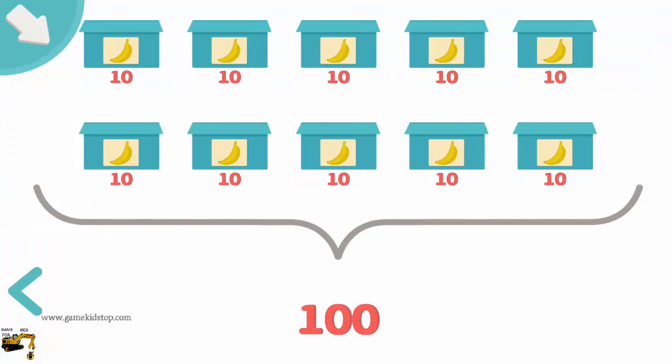This is the number 100. The number 100 is made up of three digits. The first digit shows the number of hundreds. The second digit the number of 10s and the third digit the number of units. 10 times 10 is 100. This means that there are 10 10s in the number 100.